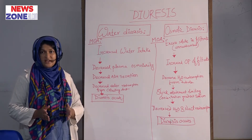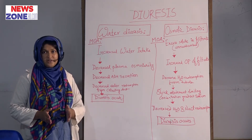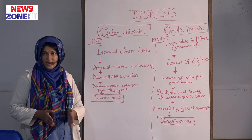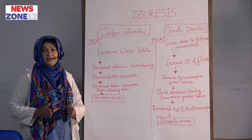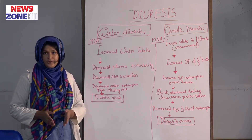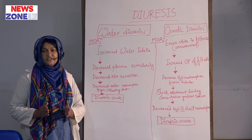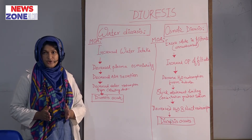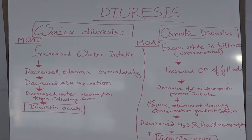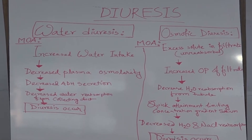There are some causes of water diuresis. Number one: excess water intake. Number two: infusion of hypotonic fluid such as 5% dextrose in aqua. And number three: diabetes insipidus.